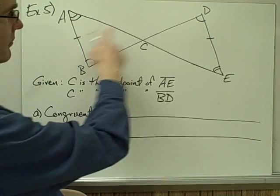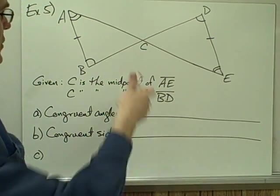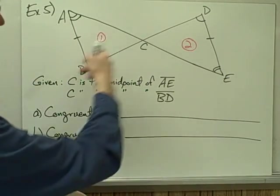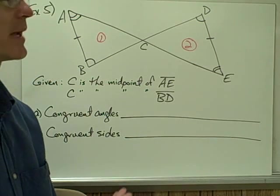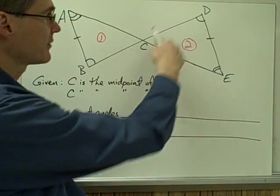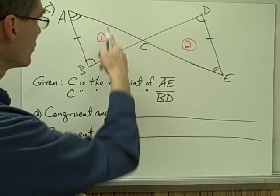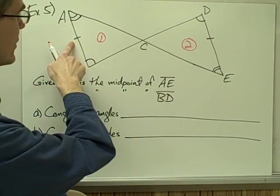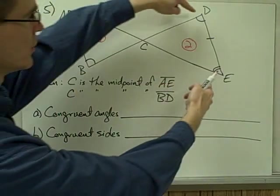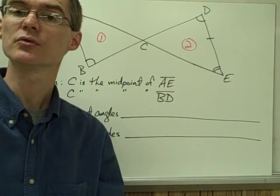Here we have example number five. I have two triangles except these two triangles are connected up into one figure. I'm going to label them triangle number one and triangle number two. If I just look at the picture, it looks like I don't have enough information to say these two triangles are congruent — I only have one side on triangle one congruent to one side on triangle two, and only two angles on each matching. So if all I go by is the picture, I don't have enough information.